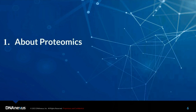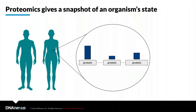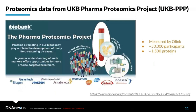Proteomics gives a snapshot of an organism's state — the protein expression profiles tell you what proteins are active and how much. By studying these profiles, we can identify biological processes contributing to a stimulus or trait of interest. The proteomics data available on the platform was generated by the UKB Pharma Proteomics Project (UKBPP), a collaboration between UK Biobank and 13 pharmaceutical companies, characterizing plasma proteomic profiles for about 53,000 participants measuring approximately 1,500 proteins using Olink technology.